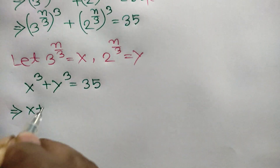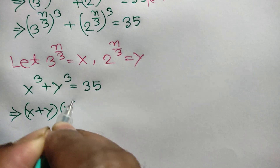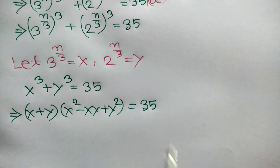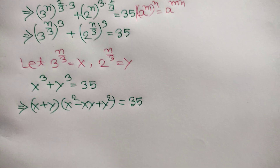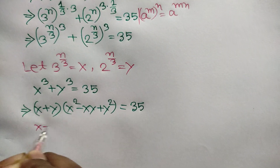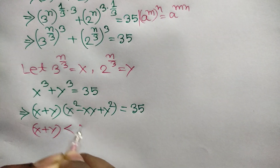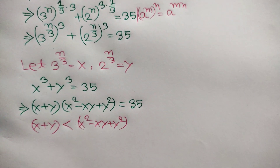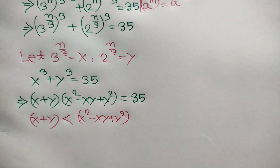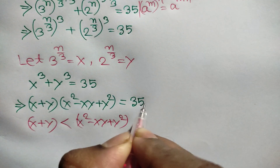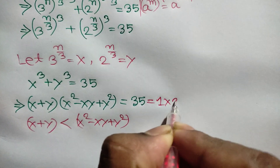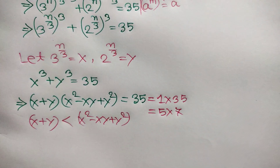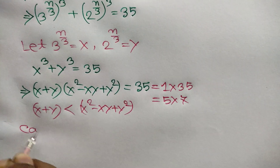Now we can use an algebraic identity and write x plus y times x squared minus xy plus y squared is equal to 35. Note that x plus y is less than x squared minus xy plus y squared. Now 35 can be written as 1 times 35 or 5 times 7, so there are two cases.